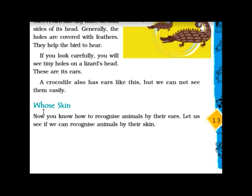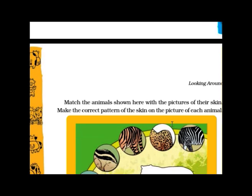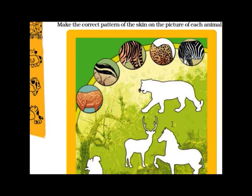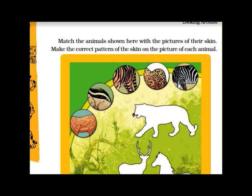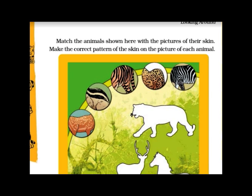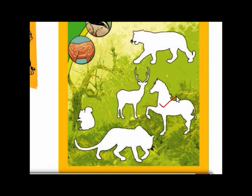We will move to the next topic: Whose skin? Now you know how to recognize animals by their ears. Let us see if we can recognize animals by their skin. Every animal has a different skin texture, and from that we come to know which animal is which. Very easy to find is zebra — zebra has a black and white pattern.